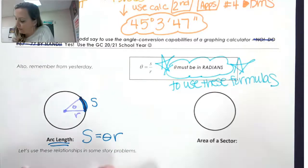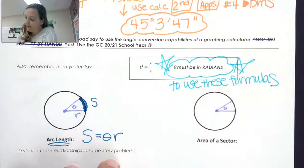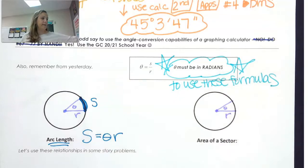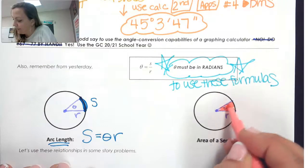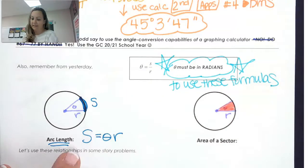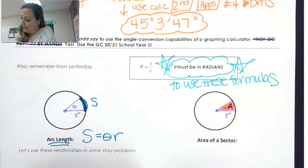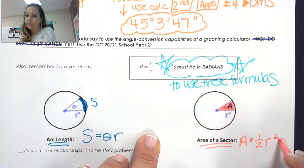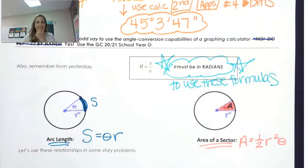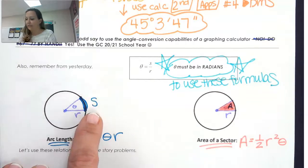Now let's differentiate that from the area of a sector, which is the shaded piece of the circle. The area of a sector is one-half R-squared times theta. Again, to use these formulas, theta must be in radians. So here's our formula for arc length: S = Rθ, and here's our formula for area: A = ½R²θ.